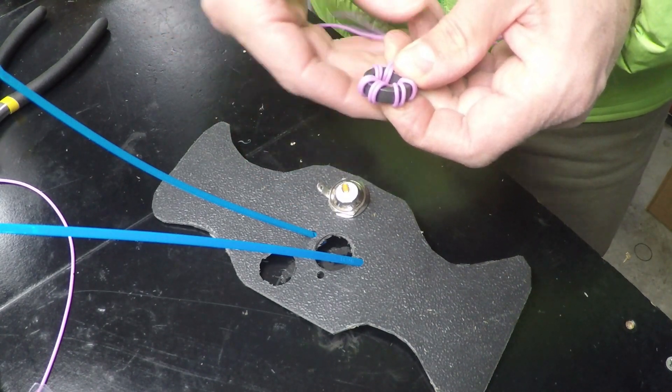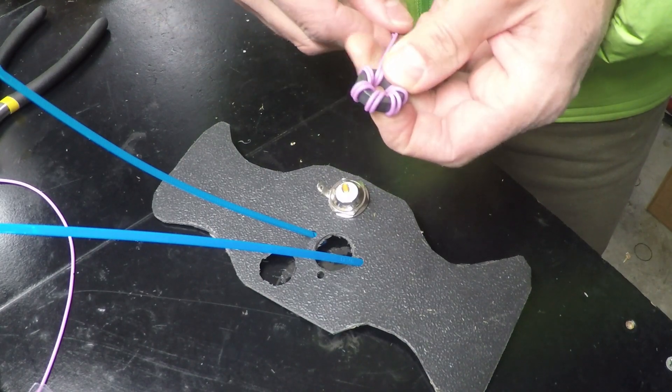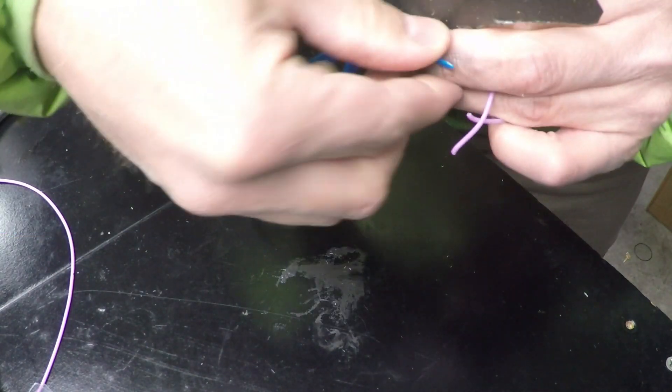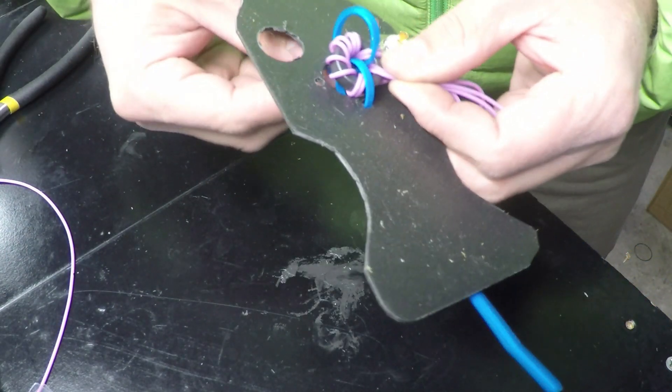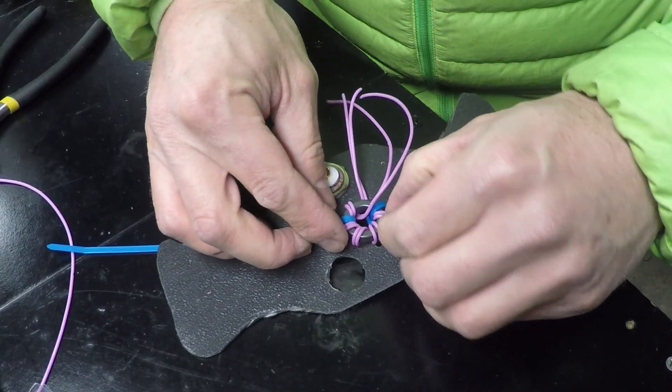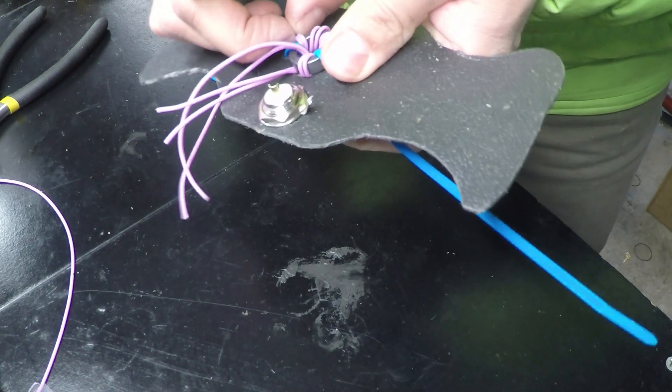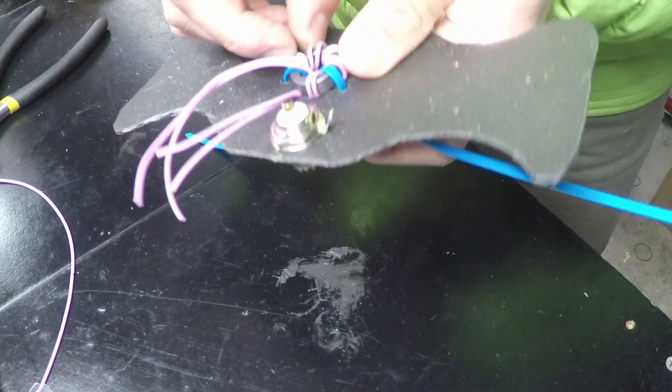My ferrite core here, I wound six times. I took an equal length of that 24 AWG wire and wrapped it around the core six times. So the six turns. And that is essentially my RF choke.